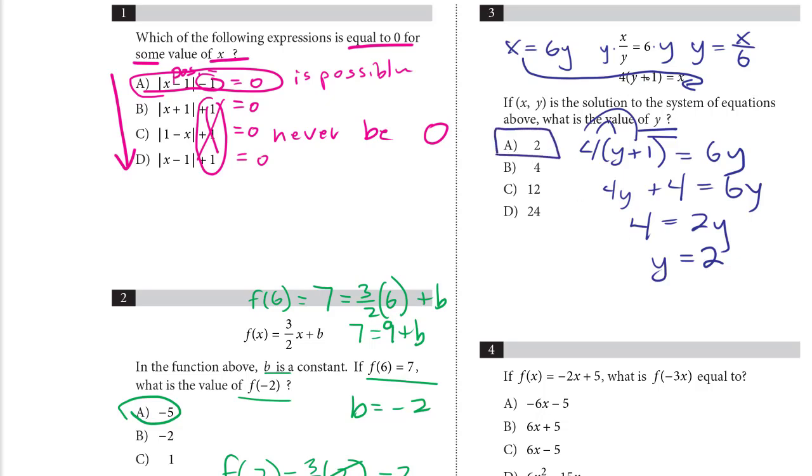But I want to check that. So let's take a look. If y equals 2, then x over 2 equals 6. That means x would have to equal 12. Well, let's see on the other one. Does that work? 4 times 2 plus 1, plugging in 2 for y, is 4 times 3 or 12. x equals that. Yeah, that checks as well. So the correct answer is, in fact, A.